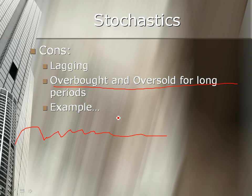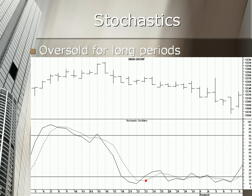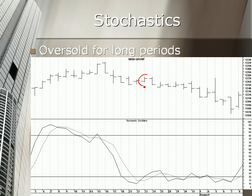Here you can see that the stochastic oscillator is oversold for a long period of time. We might think we've got a signal because the stochastic has risen, crossed its signal line, and is rising from oversold territory. So there are several reasons we think we've got a signal: oversold, crossed its signal line, and rising upward. We might think we've got a buy signal around this point, and indeed the next day the price rises a little, which adds to our confidence.